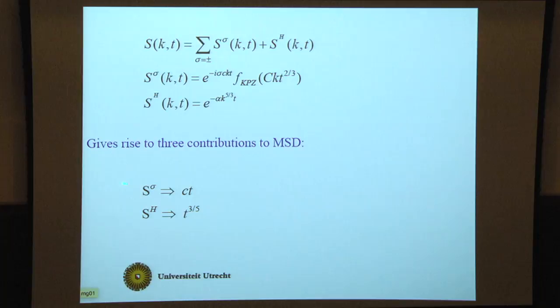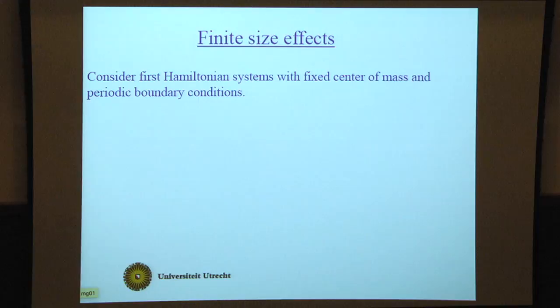This gives rise to three contributions to the mean square displacement. There's a sound mode contribution which goes as ct because of this drift with velocity c, and a heat mode contribution that goes as t^(3/5). Now I want to show some comparisons with simulations done by Harald Posch on a square shoulder model, very extensive and accurate simulations.